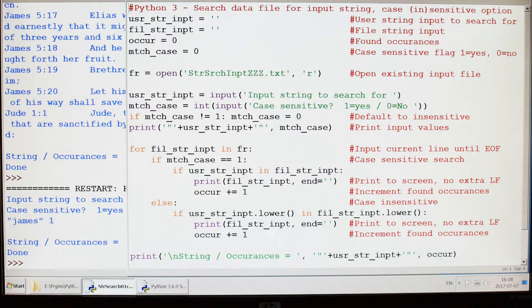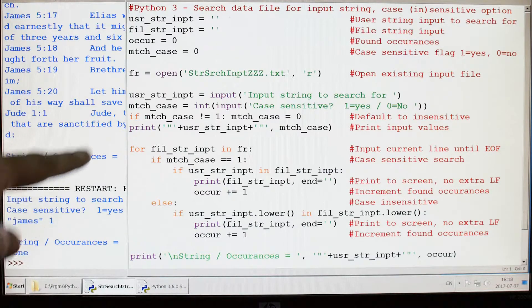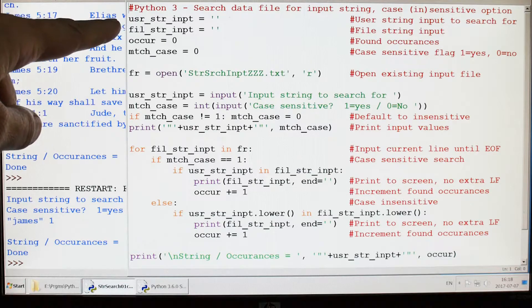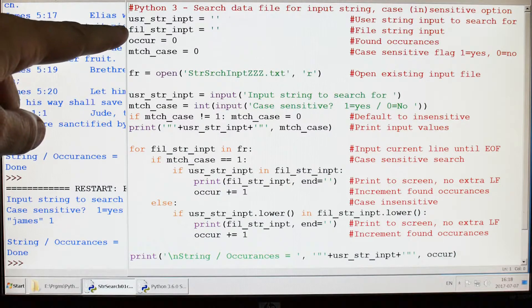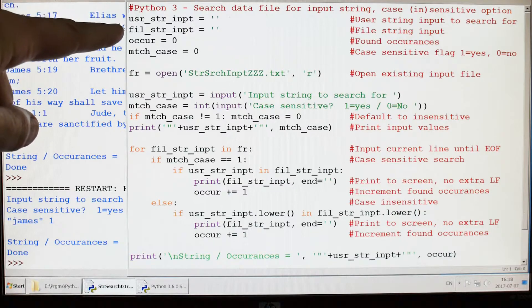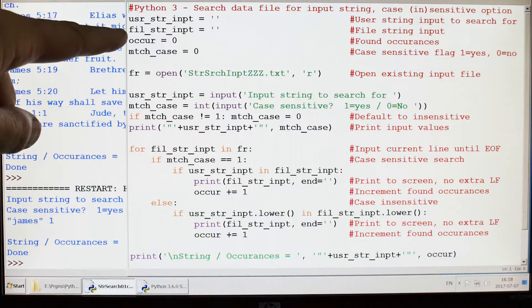Those are the pre-notes, so let's get started. The first line up here is the user string input—that's pretty obvious, that's what you're searching for. The next one is the file string input, so every time the program reads a string from the file it's going to go in here and that's where the comparison will be between these two things.